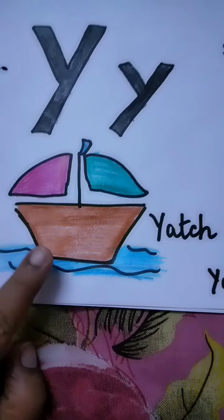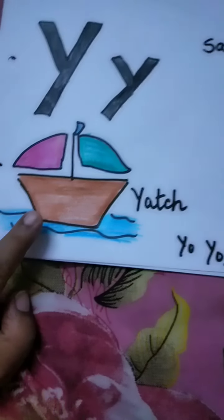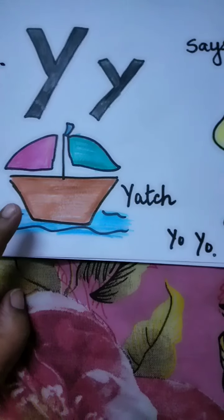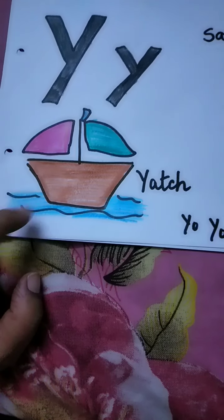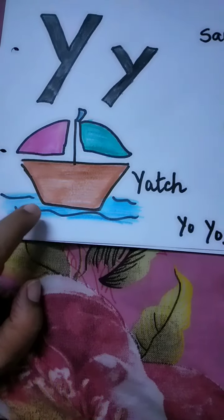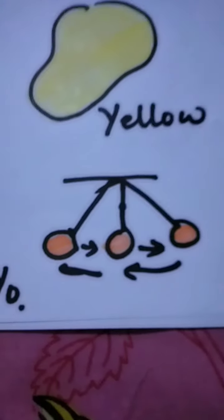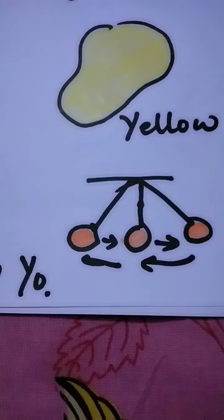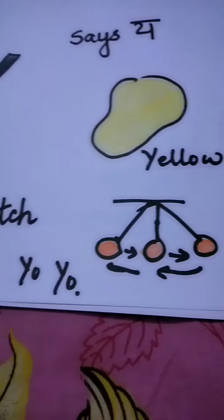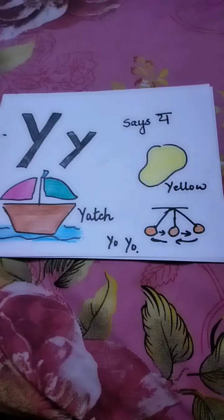Then, yacht — Y, ya, ya, ya. A yacht is just like a boat but bigger than a boat and smaller than a ship. Then yo-yo. Yo-yo is a toy with a string tied to it and kids play with it. So the three pictures are yellow, yo-yo, and yacht.